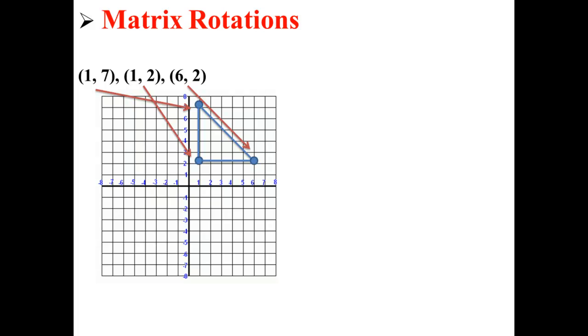Here we have a triangle graphed on a coordinate plane. This triangle is made up of points (1,7), (1,2), and (6,2).